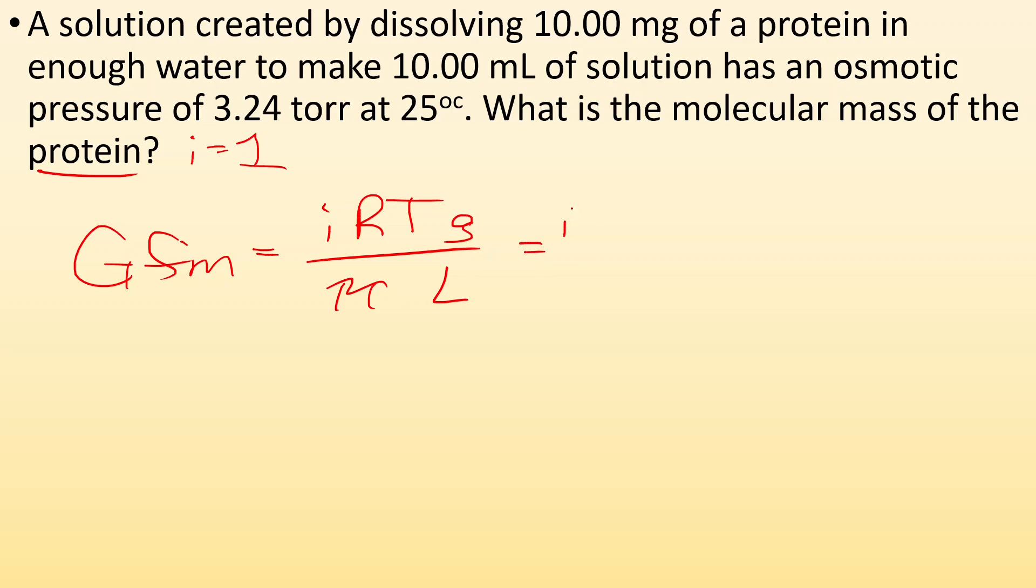So, I is one. So, I got one times my R. If I'm using torr, I got to make sure I use the correct gas constant. 62.36, but it's a liter torr over mole Kelvin times the Kelvin temperature. So, 25 degrees Celsius plus 273 gives me 298 Kelvin times the grams.